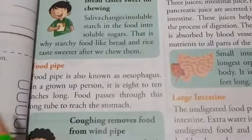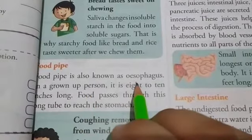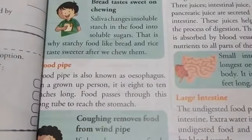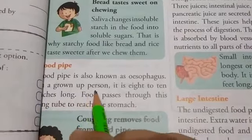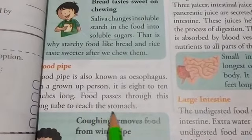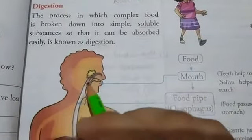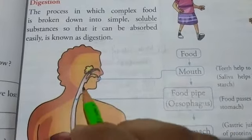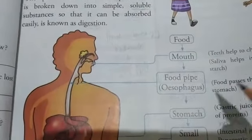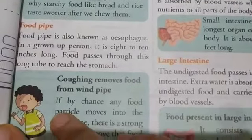Next one is the food pipe. The food pipe is also known as the esophagus and it is about 8 to 10 inches long, or about 25 centimeters long in a grown-up or adult person. Food passes through this long tube to reach the stomach. The food from our mouth passes through the food pipe, also known as the esophagus, and reaches the stomach.